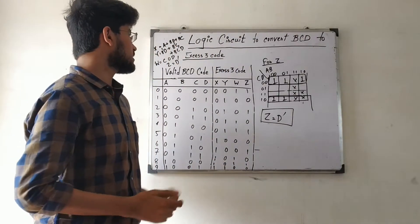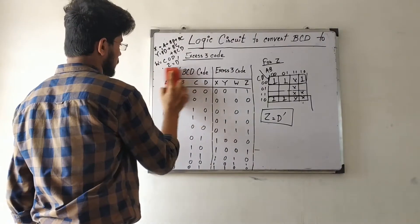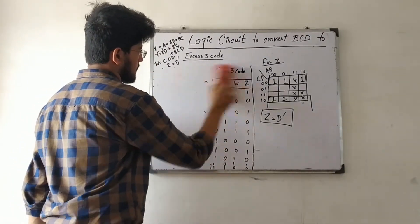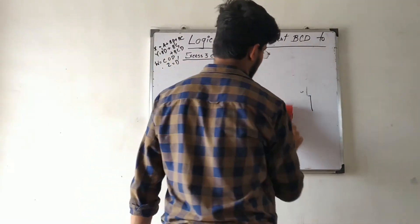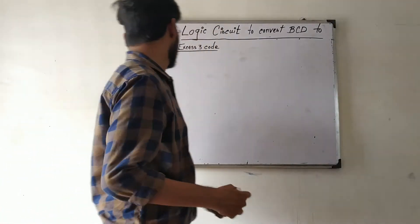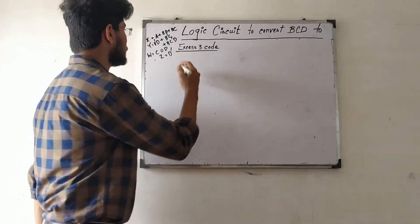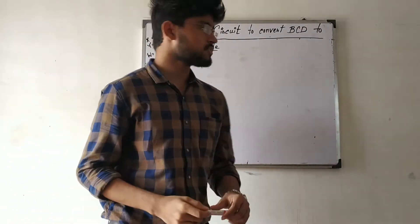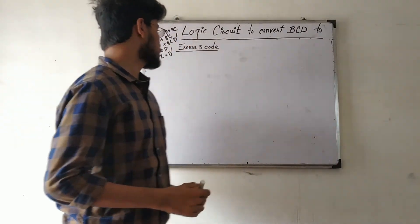Now we have all four expressions: X = A + BD + BC, Y = B̄D + B̄C + BC̄D̄ (correcting a previous mistake: it should be BC̄D̄), W = C XNOR D, and Z = D̄. We can now build the logic circuit that converts BCD code into the XS3 code using these expressions.